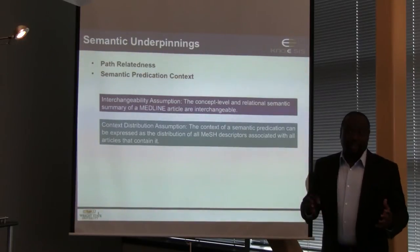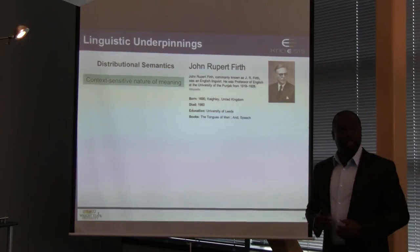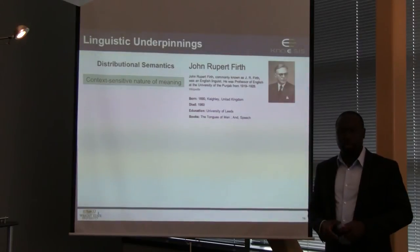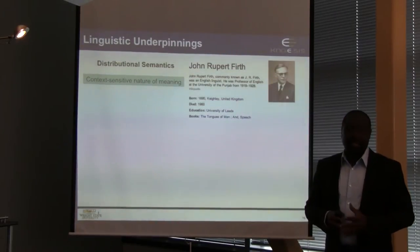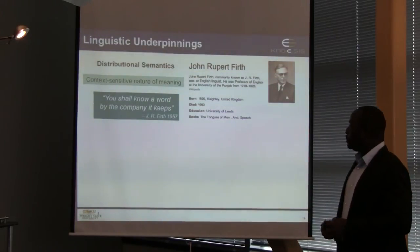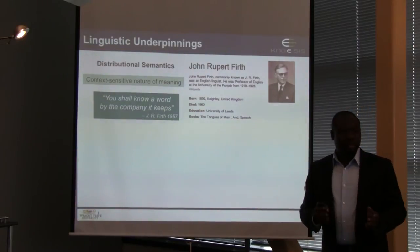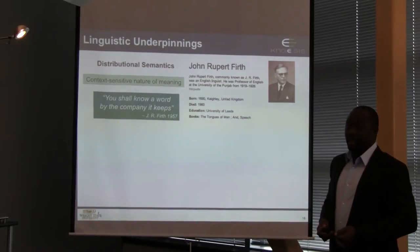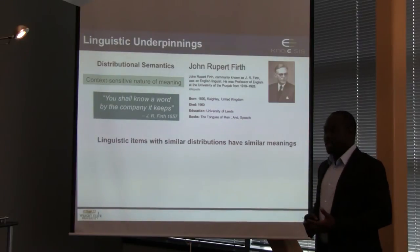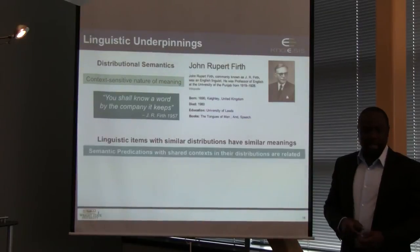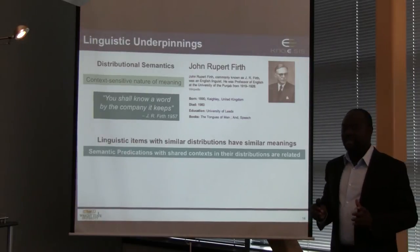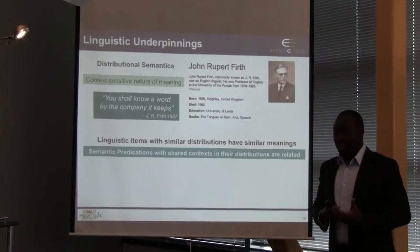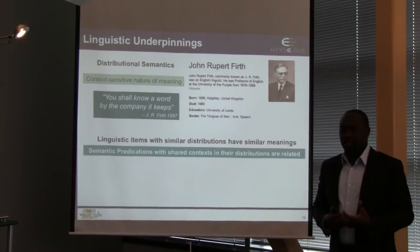These two assumptions enable us to represent the context of a path and compute relatedness between paths, so we can cluster paths into subgraphs along multiple dimensions. This is deeply rooted in distributional semantics, pioneered by John Rupert Firth, who is famous for saying 'you shall know a word by the company it keeps.' The fundamental idea is that linguistic items with similar distributions are in fact similar. We extend Firth's idea to say that semantic predications with shared context distributions are in fact related — we are capturing related associations, not merely similar ones.